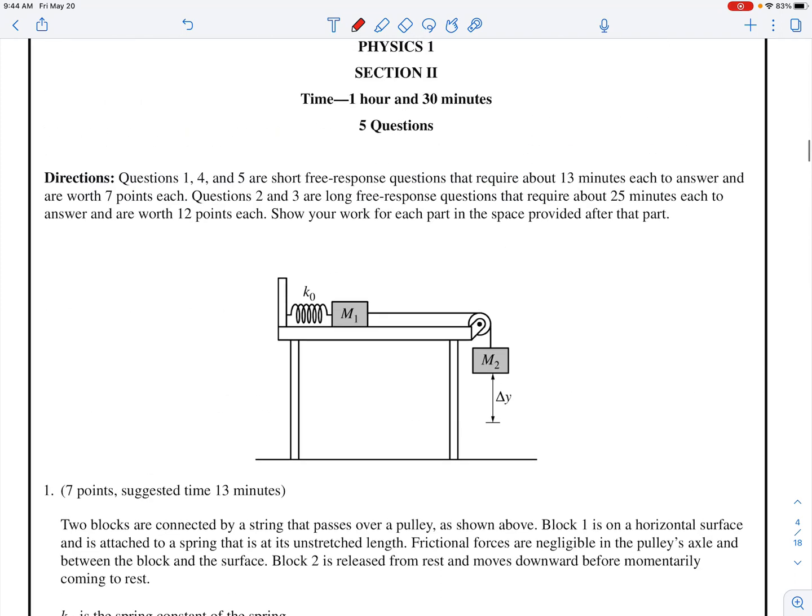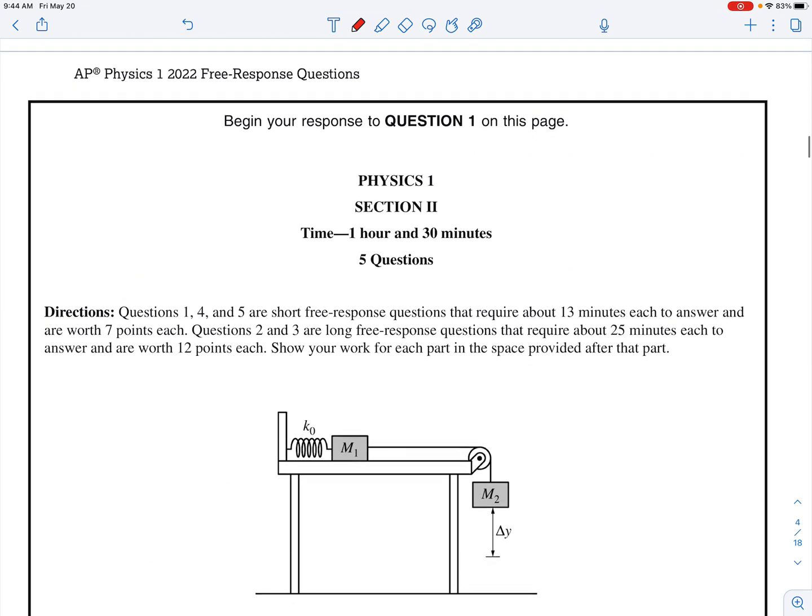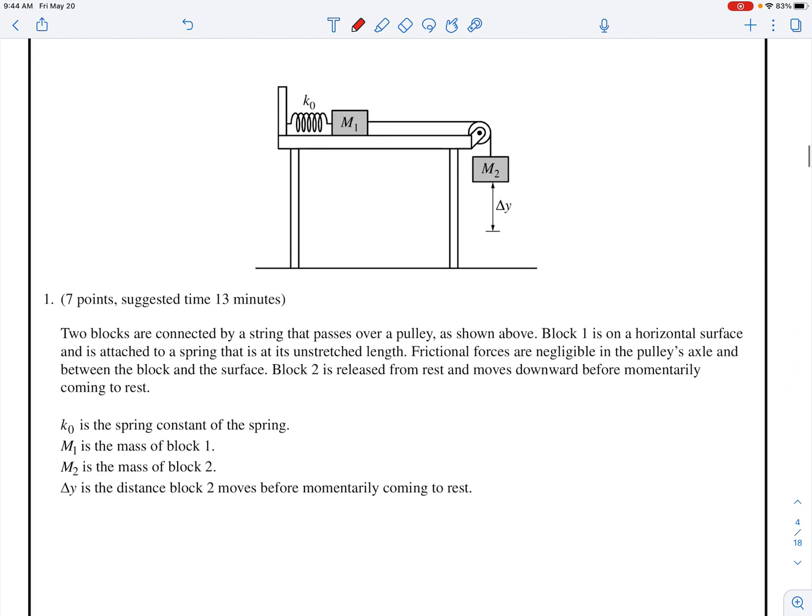Today we're looking at, I think this is number one from the 2022 Physics 1 free response. So let's see if we can knock this out real quick. First thing, always, you want to look at this thing and see what's popping here. So I see spring, I see height. That automatically tells me energy. This must be an energy problem. I see a pulley, so you could use forces. And if there is a massive pulley, which I'm pretty sure it's not going to be, then you could use torque.